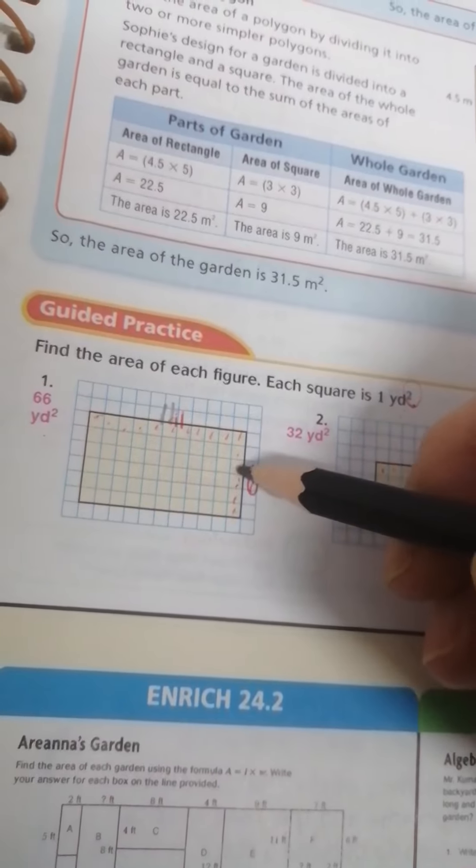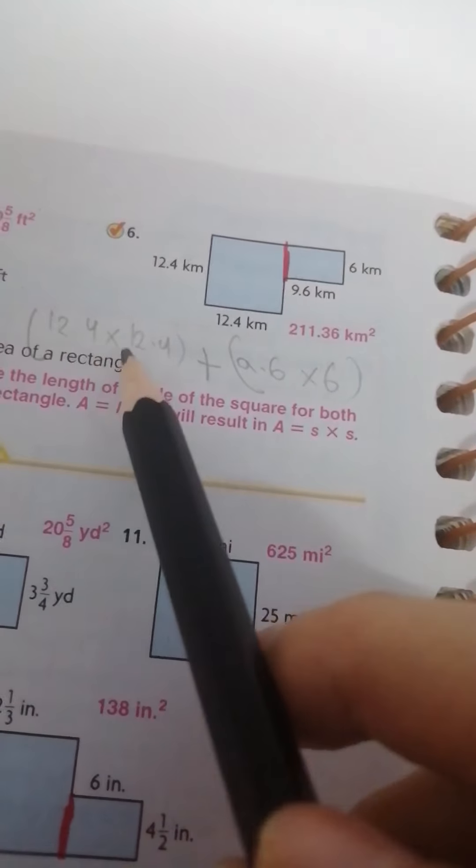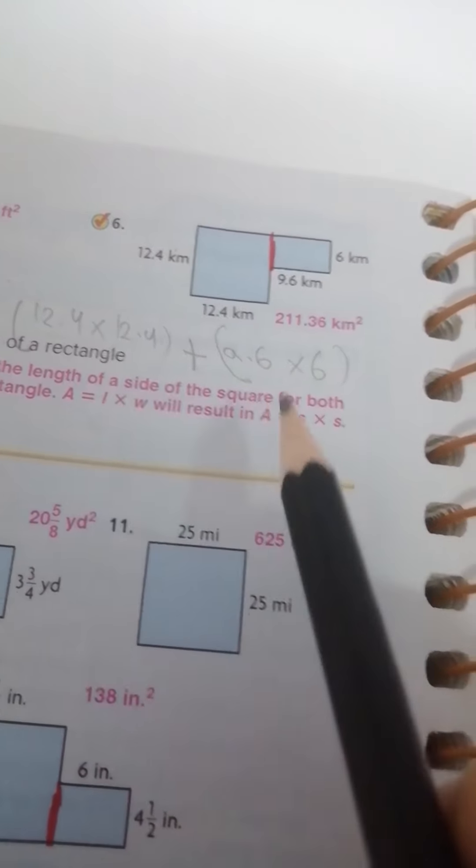Here we have 2 shapes, a square and small rectangle. Make square 12.4 by 12.4, then plus, 12.4 by 12.4 between two brackets plus 9.6 by 6. Then multiply here and multiply here, then make addition, equal 111.36 square kilometer.